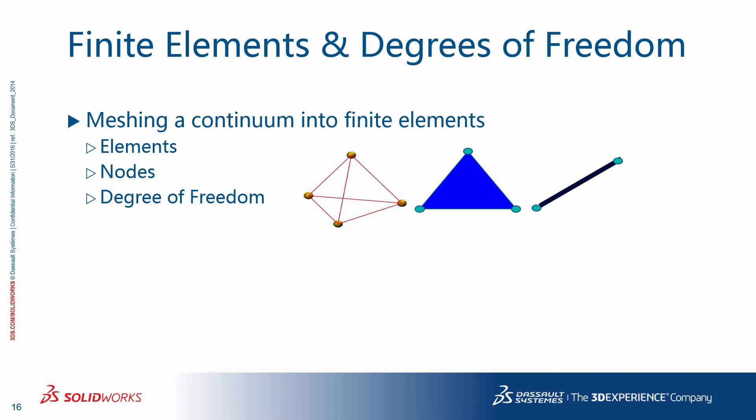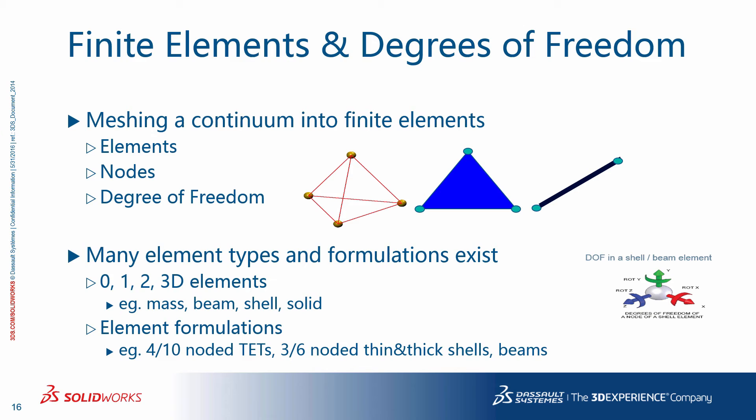In the finite element method, there are different element shapes, each with its own number of nodes and degrees of freedom, depending on the type of the problem. Many element types and formulations exist. There are different elements, 0, 1, 2, and three-dimensional elements like for mass, beam, shells, and solids. Degrees of freedom in a shell or beam in 3D for stress analysis have six degrees of freedom, three translational and three rotational. There are also many element formulations such as the four and ten-noded tets, three and six-noded thin and thick shells, beams, and so on.